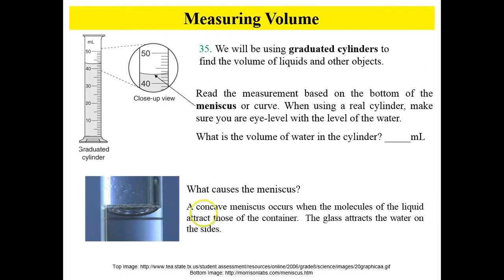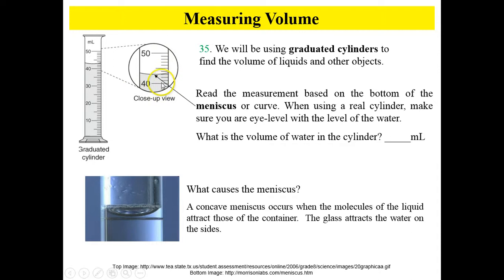So how do you measure volume? To measure liquid volume, we use graduated cylinders to find the volume of liquids and irregular objects — things like a rock that doesn't have straight sides to measure with a ruler. When you use a graduated cylinder, it's important to note something called a meniscus. You read the measurement based on the bottom of the meniscus, which is the bottom of the curve. Make sure you're eye level with the liquid. So: here's 40, here's 45, here's 50 — so this is 41, 42, 43 milliliters.